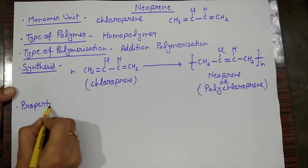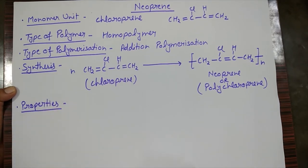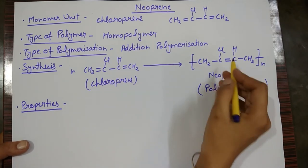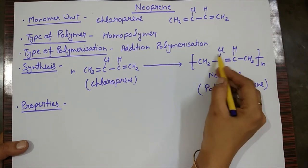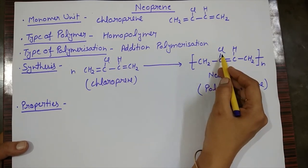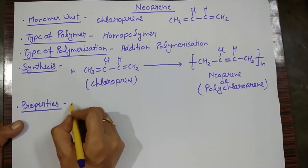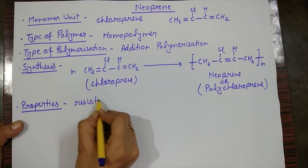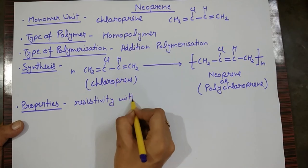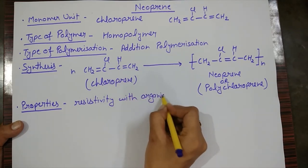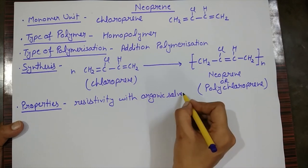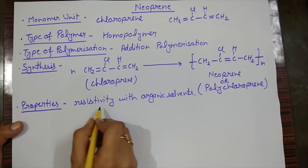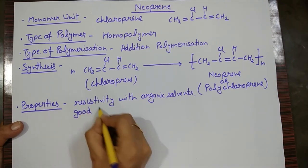Now the properties. Neoprene is good quality compared to natural rubber. The difference between natural rubber and neoprene is the CH3 group replaced by Cl. Neoprene shows resistivity with organic solvents and resistance to oils and other similar substances.